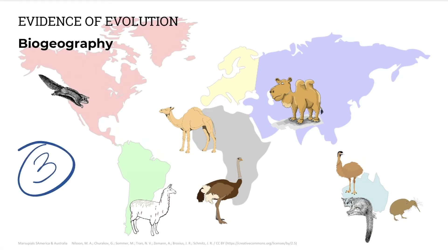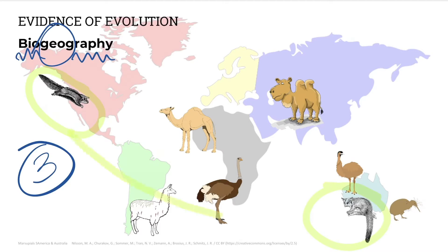Number three is biogeography, where we look at living things in different places and study the species distribution on Earth. Some plants and animals are similar on different land masses. Scientists suggest that these similar organisms may have a common ancestor if these continents were, at one stage, one land mass.